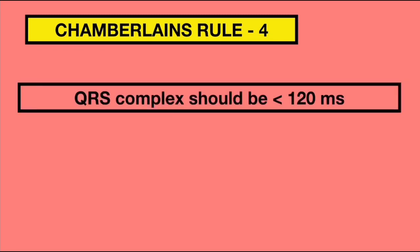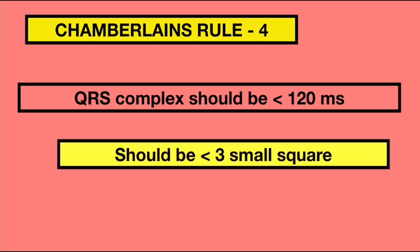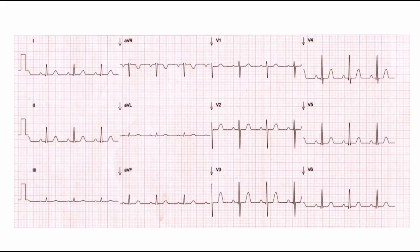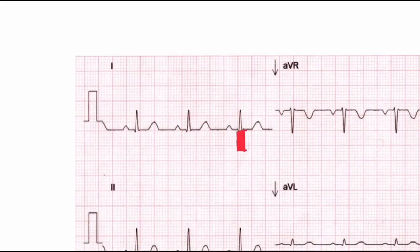Rule 4 states that the QRS complex should be less than 120 ms in duration, that is less than 3 small squares. In this ECG, we can see that the duration is 90 ms only.